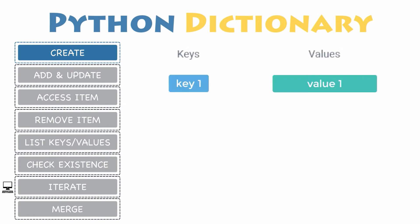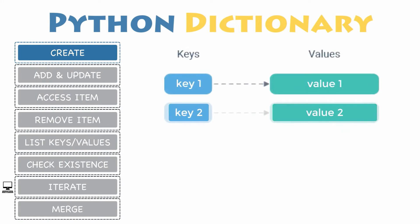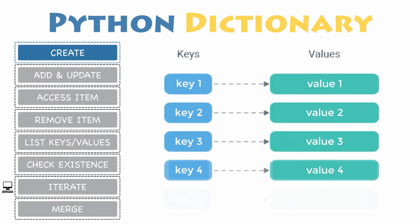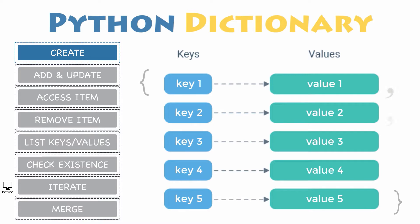Creating a dictionary in Python is as simple as placing key-value items inside curly braces, separated by commas, and each key is separated from its associated value by a colon. While values can be of any data type and can repeat, keys must be unique and of immutable type like string, number, or tuple with immutable elements. Let's have a closer look at its syntax so you can declare your own dictionary.